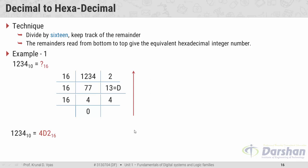If you wrote the answer as 4, 13, 2 instead of 4D2, you could not differentiate whether 13 is one number or the digits 1 and 3 separately. That is why numbers 10 to 15 are written as alphabets A to F in the hexadecimal number system.